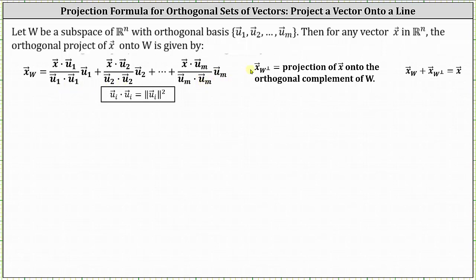For some more notation, vector x sub W-perp is equal to the projection of vector x onto the orthogonal complement of W. This vector is important because its magnitude will give us the distance from vector x to W. Let's take a look at an example.